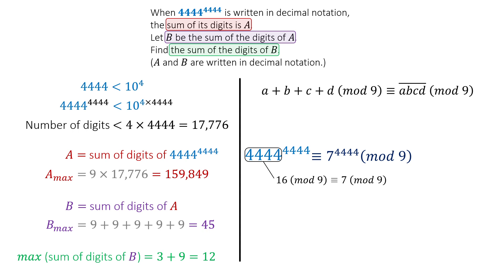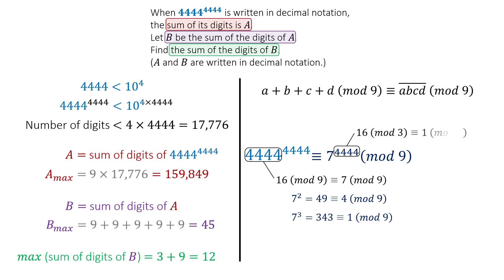Now we just need to tame the powers of 7. We consider the powers of 7 mod 9: 7 squared is 49, which is equivalent to 4 mod 9; 7 cubed is 343, which is equivalent to 1 mod 9. Every third power of 7 returns to 1. By using the divisibility rule for 3, we know that 4,444 is equal to the sum of its digits under mod 3. Adding the digits gives us 16, which gives us 1 mod 3.